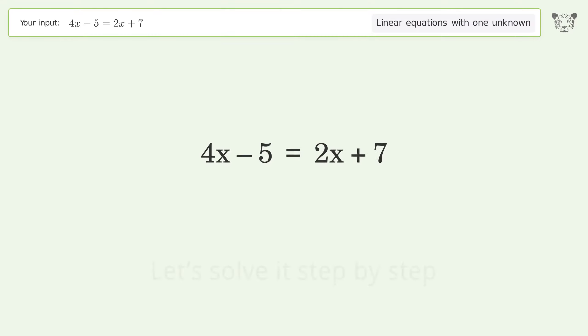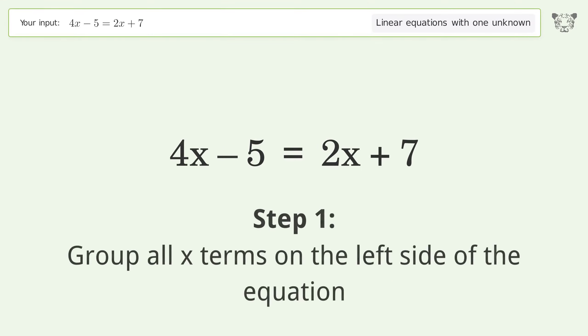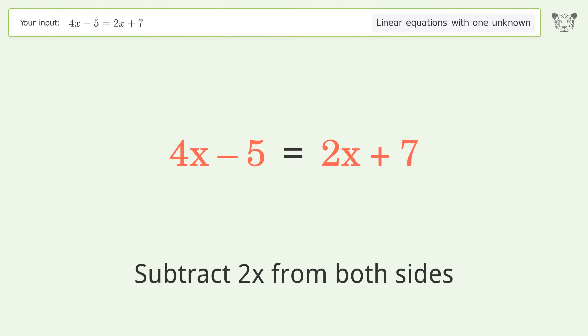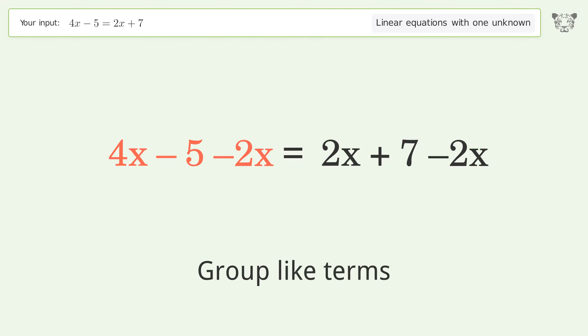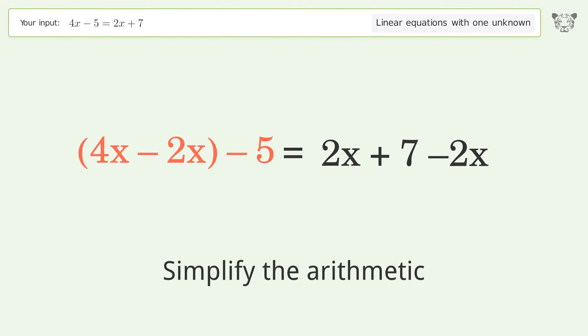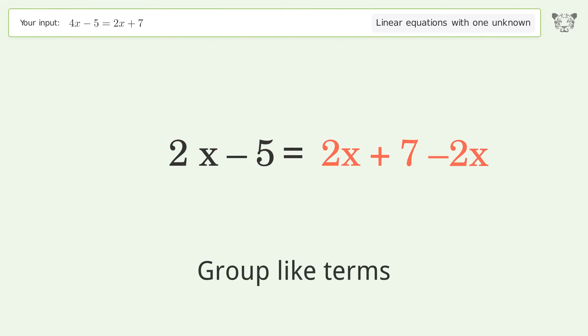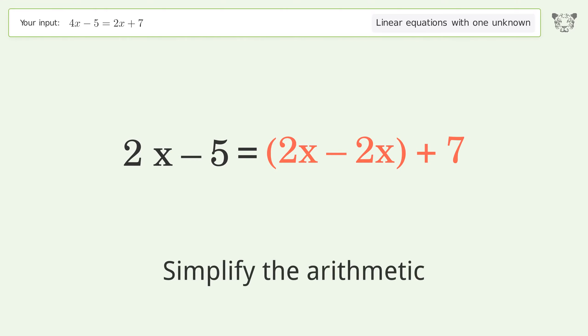Let's solve it step by step. Group all x terms on the left side of the equation. Subtract 2x from both sides. Group like terms and simplify the arithmetic.